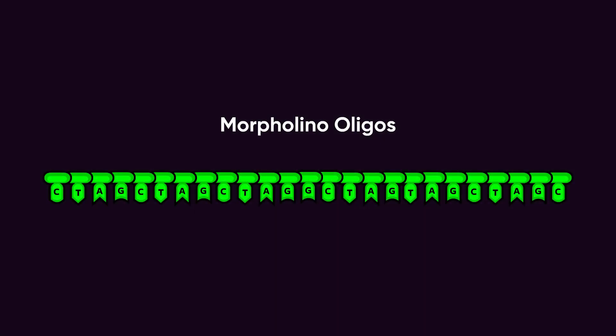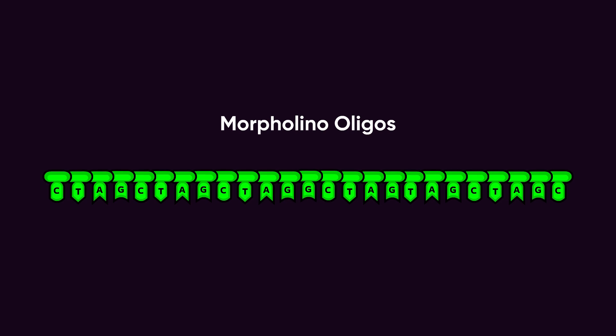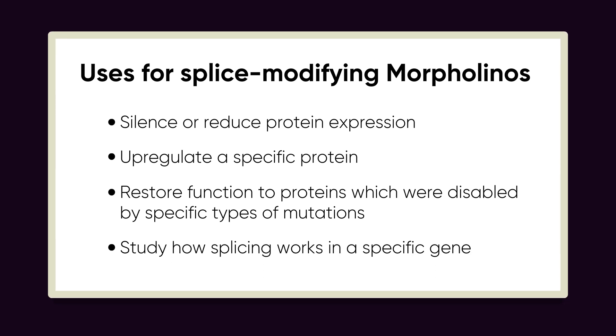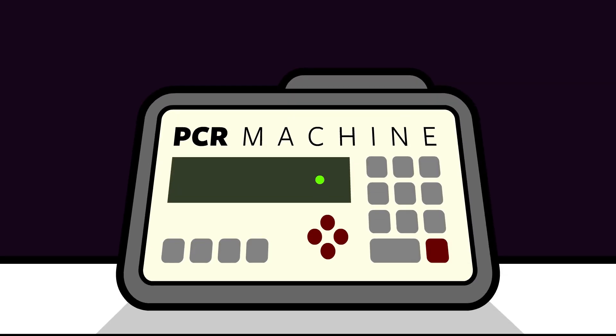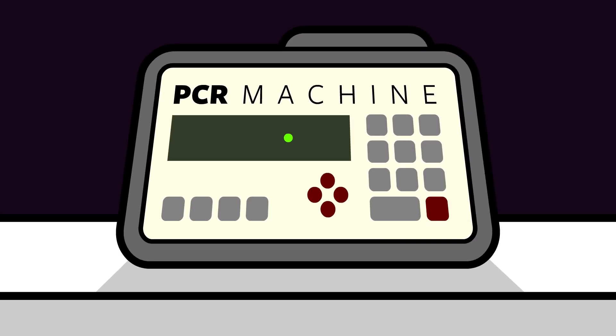In summary, morpholino oligo sequences can be designed to artificially modify pre-mRNA splicing. Depending on the target, alternative splicing can be used to silence or reduce protein expression, upregulate a specific protein, restore function to proteins which were disabled by specific types of mutations, or to simply study how splicing works in a specific gene. Testing the efficacy of a specific splice-modifying morpholino can be done via reverse transcriptase PCR, often in combination with gel electrophoresis to visualize PCR product sizes.